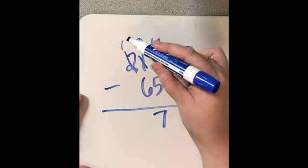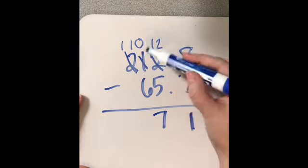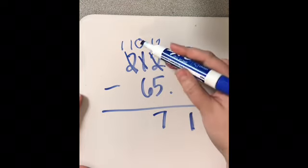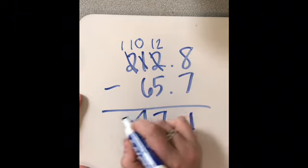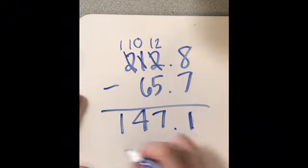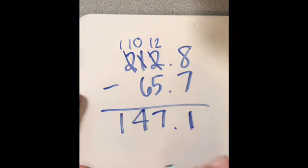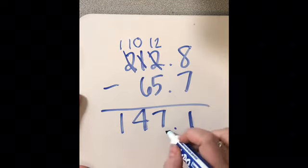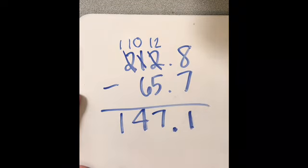So instead of 2, I have 1, and instead of 0, I have 10. So now we can do 10 minus 6. So we think about what goes with 6 to make 10. And then 1 minus nothing. Our decimal goes in one straight line. Go ahead and say that decimal in your head. 147 and 1 tenth.